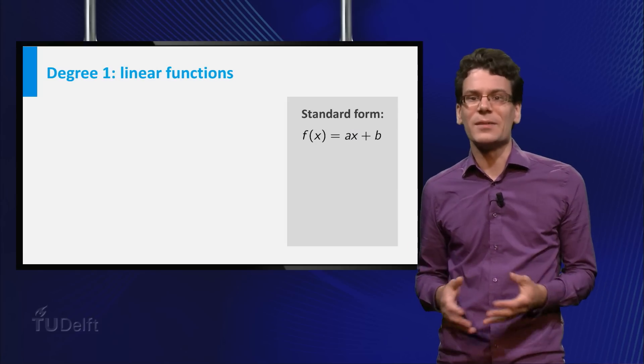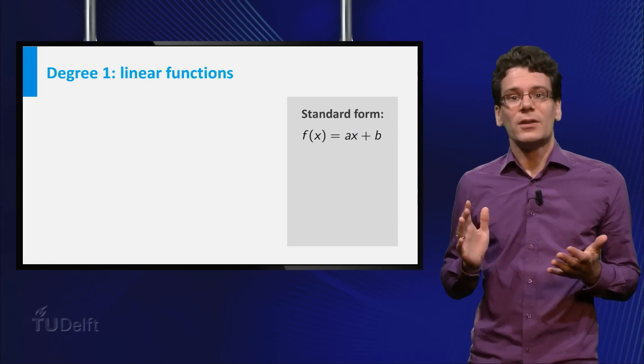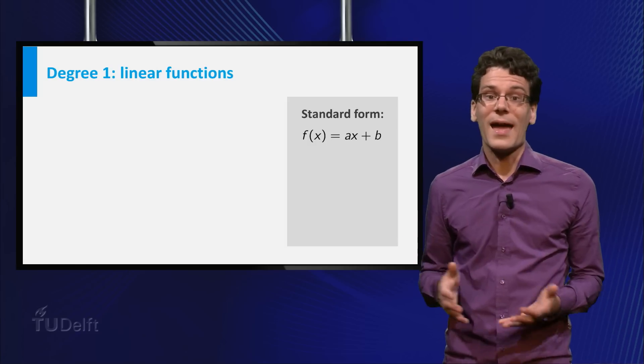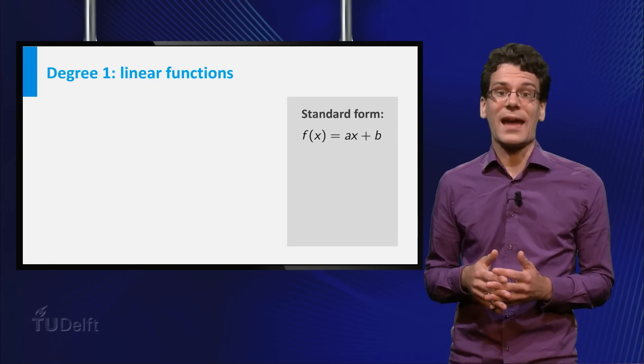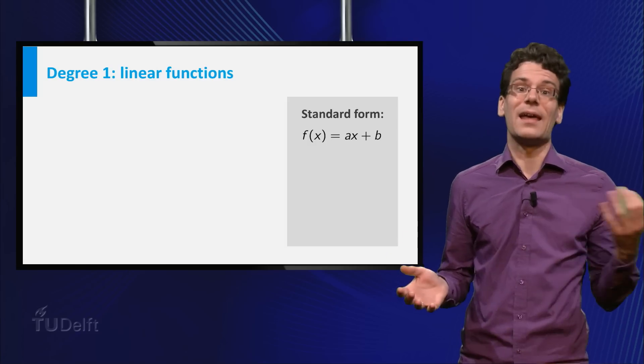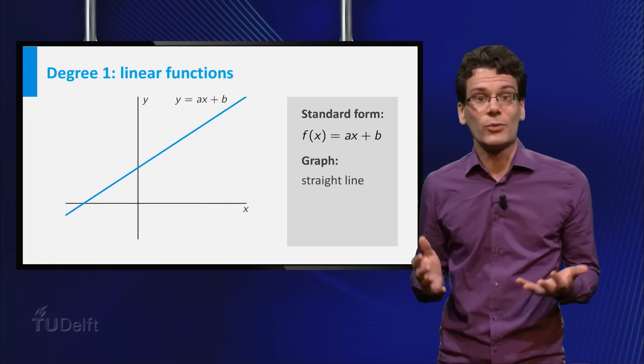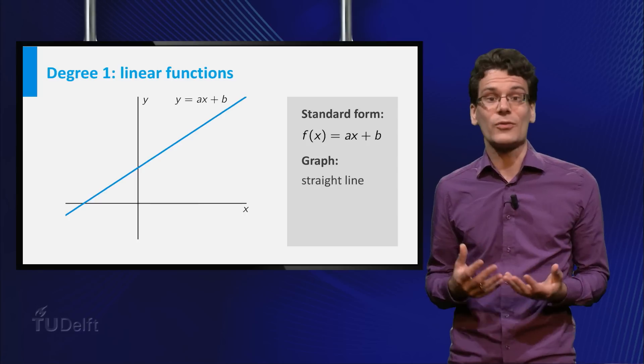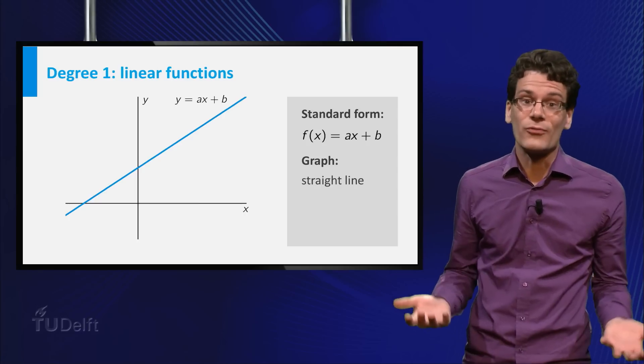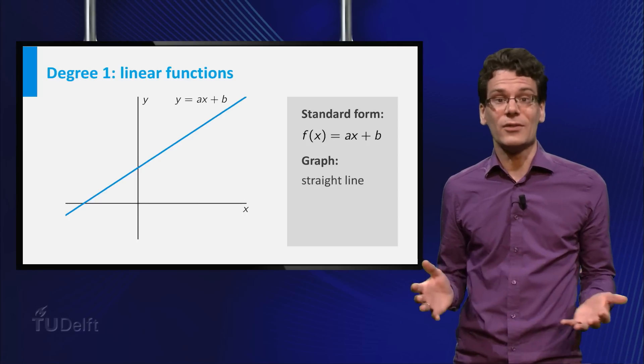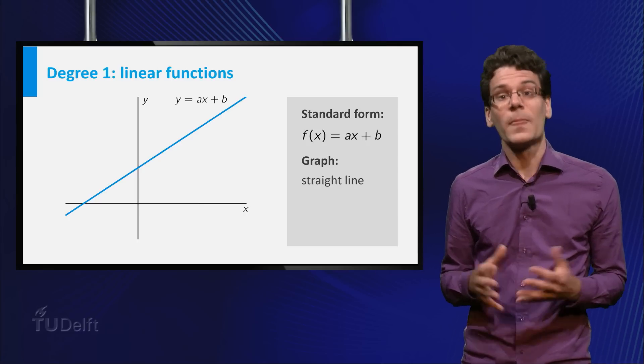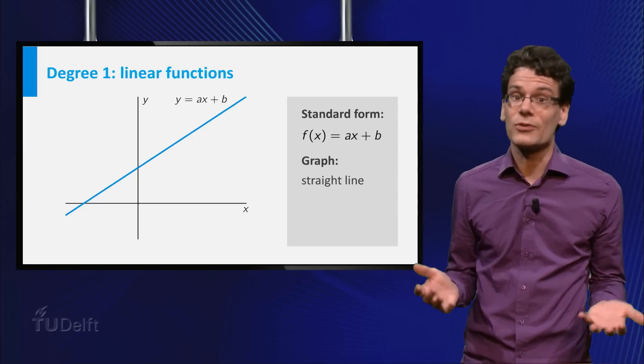Let's make this a little bit more exciting by passing to degree 1. Degree 1 polynomials have the form f(x) equals ax plus b, where a and b are constant numbers and a is non-zero. The graph of a degree 1 polynomial function is a straight line. That is why these functions are also called linear functions. By the way, also constant functions are examples of linear functions.